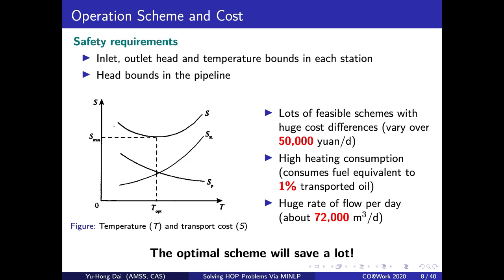A feasible operation scheme in the HOP should satisfy some safety requirements, like the inlet and outlet values, bounds, and head bounds in the pipe. Different pump combination and oil temperature may lead to different feasible schemes. And the differences of total running costs of these feasible schemes are huge. To save the running costs, we need to find the optimal scheme as possible as we can.